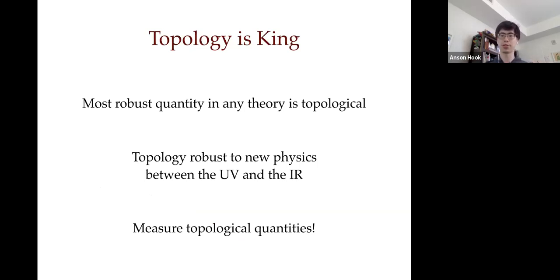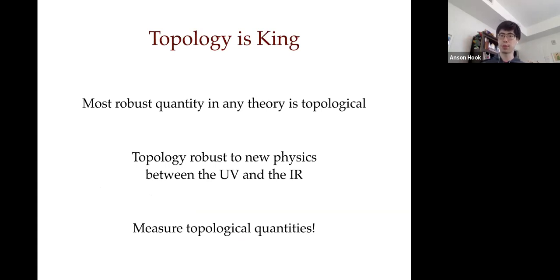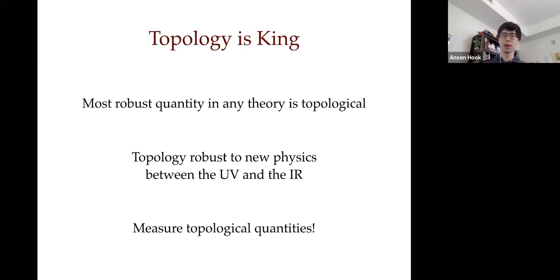If you listen to physicists today, you'll hear a lot about topology, and for good reason: topology is something that's really hard to change. The most robust features of any theory are its topological ones. A really nice statement you can make in microscopic theories is that topological quantities don't change between the microscopic theory and larger scales — they don't change under RG evolution. So if you measure something topological, you directly measure something intrinsic about the theory itself.